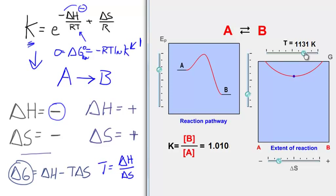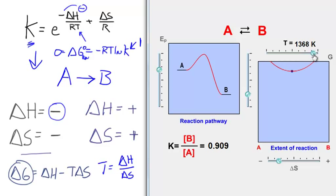Notice that when the K value is about 1, the blue dot is right about in the center. And now if I increase T higher across the crossover point, this reaction goes from product favored to reactant favored. The sign of delta H dictates how the system's K value and its directionality changes with T.